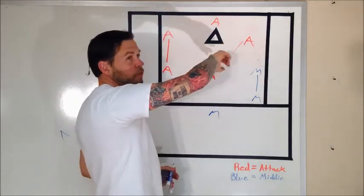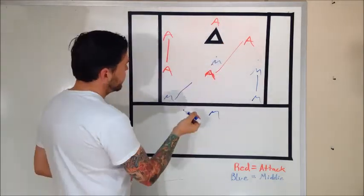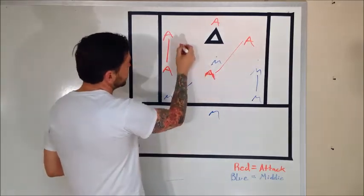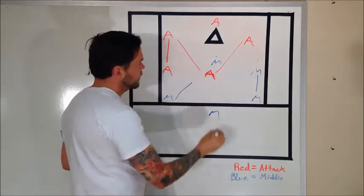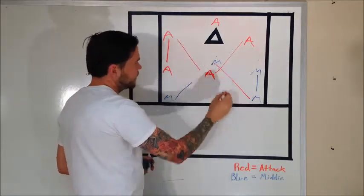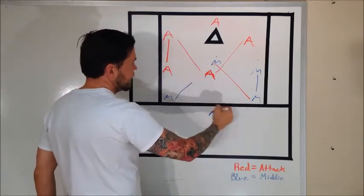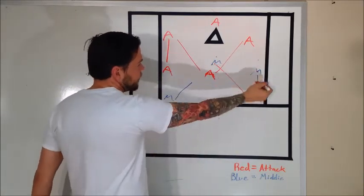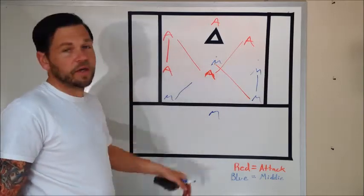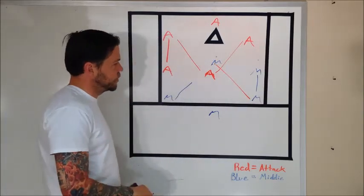And this middie came in from here, so he just completes that triangle. Then that middie is just going to pop back. The top middie just kind of stays where he's at. The importance of keeping this top middie where he's at is in case we miss a pass or they make a save—we always need